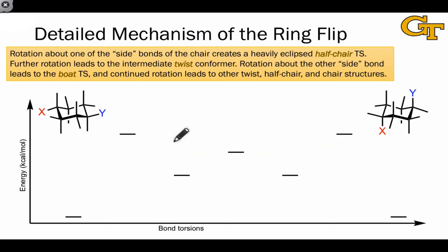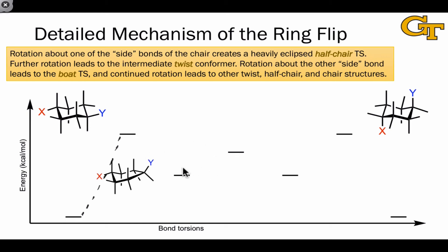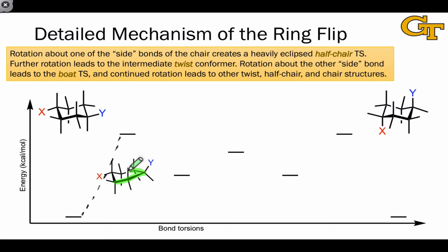Let's now take a detailed look at the mechanism of the ring flip, focusing on the energies of the conformers and why they have those energies. The first stage is rotation about one of the side bonds to create a heavily strained structure called the half chair. It's called the half chair because it still has the headrest, but the footrest has been flipped up into a position where the other five carbons are essentially forming a plane, leading to a huge amount of torsional strain. Because the half chair is the highest energy structure along this pathway, the energy difference between the chair and the half chair amounts to the activation energy of about 10.8 kilocalories per mole.